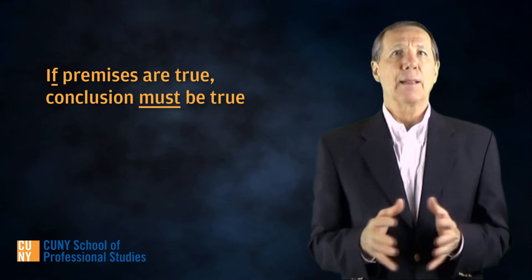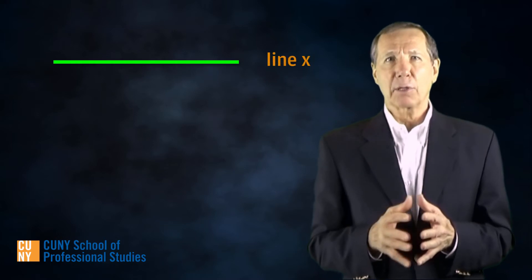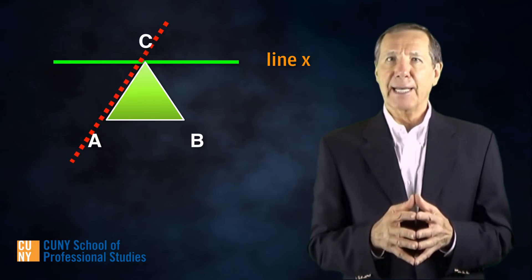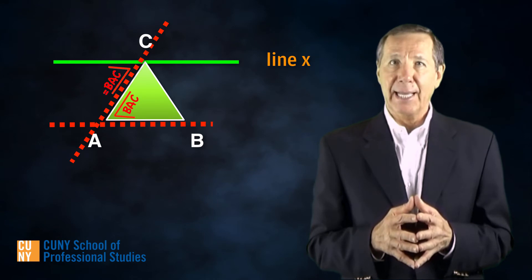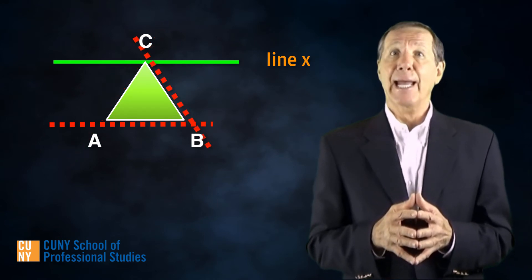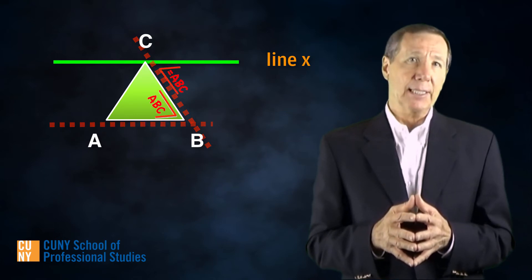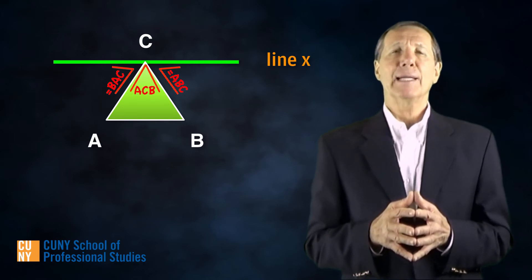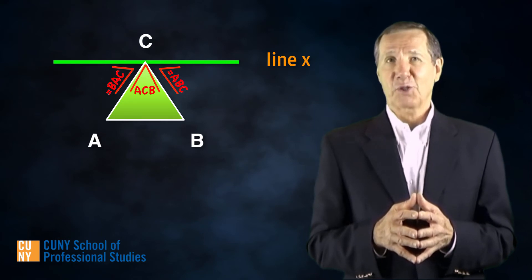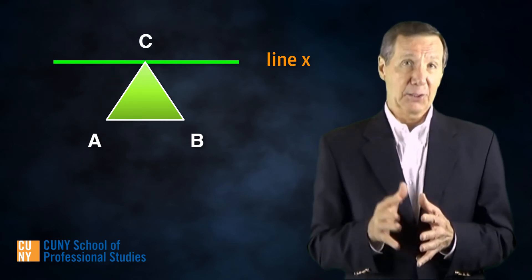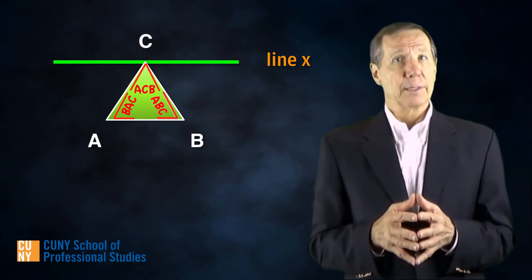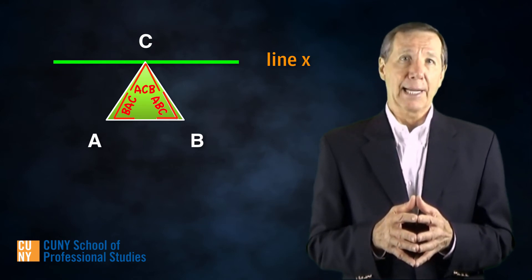A set of premises leading to a conclusion that we must accept provided the premises are true. Here's the deductive proof. Let X be a line drawn parallel to side AB of triangle ABC that goes through point C. Line AC cuts line X and AB at the same angle — angle BAC. These two angles and the final angle, angle ACB, form a straight angle on X, which is always 180 degrees. And as you can see, these are precisely the angles that are interior to the triangle. Therefore, the interior angles of a triangle are equal to 180 degrees.